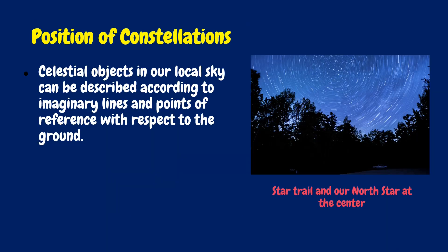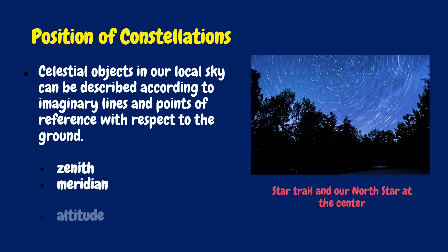Position of constellations. Celestial objects in our local sky can be described according to imaginary lines and points of reference with respect to the ground, zenith, meridian, altitude, and direction. These are the points used to locate stars.